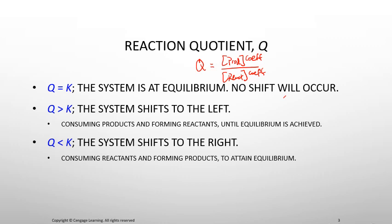If Q is greater than K, too much product means the reaction shifts left to consume products and reform reactants. If Q is less than K, there are too many reactants compared to products, so the reaction shifts to the right, producing more products. The reaction increases the numerator and decreases the denominator until equilibrium is established.